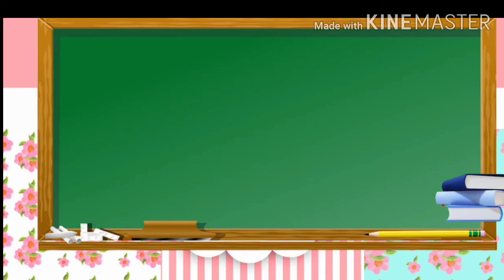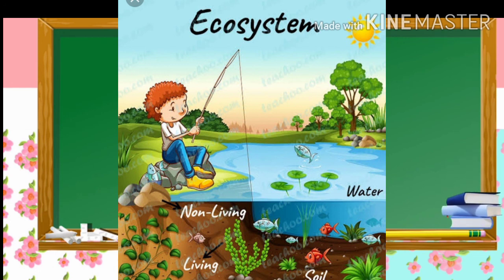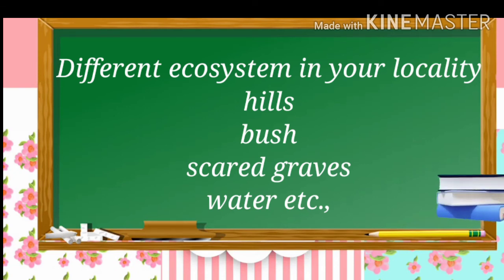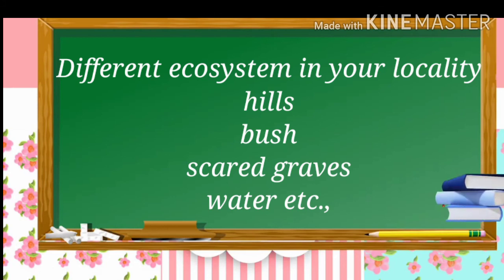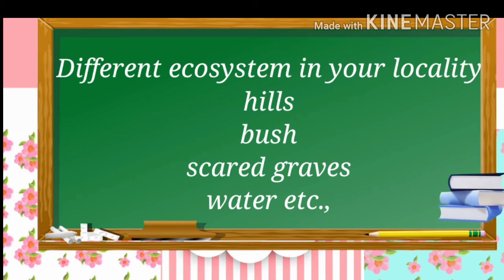It is very important to preserve the forest — an ecosystem with diversity for sustaining life on earth. Can you identify the different ecosystems in your locality? Some ecosystems in your localities are hills, bush, sacred groves, water, etc.